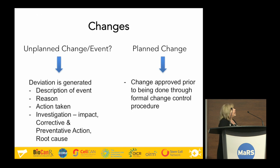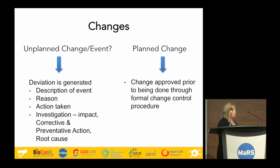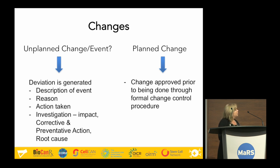Changes happen. Unplanned things happen — power outages, equipment breakdowns. But they must be documented when they do. We have deviation forms that must be filled out: you describe the event, discuss the reason, and investigate why it happened and what actions were taken to correct it. A full investigation determines the impact of the deviation, and then corrective and preventative actions are put in place so it doesn't happen again, including finding the root cause. For planned changes, you can make changes, but there is a lot of work involved — you must assess risk and get multiple approvals.